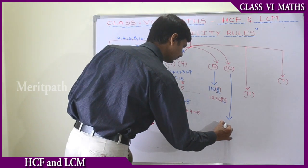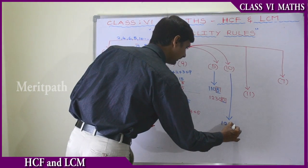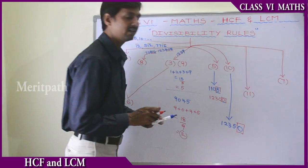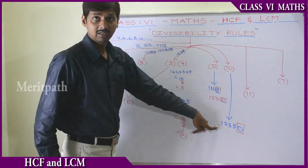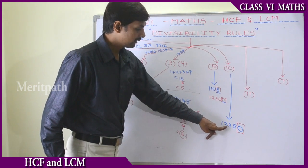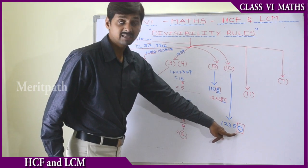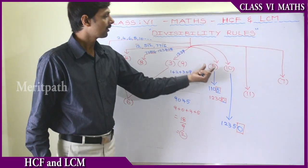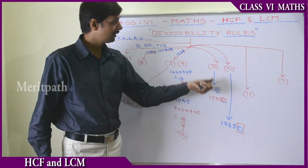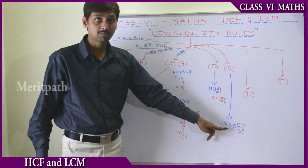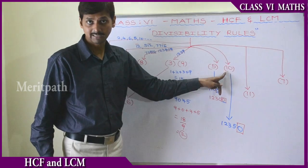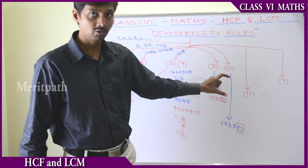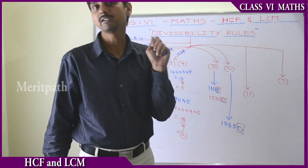For divisibility by 10: if the units place of a number is only 0, then the whole number is divisible by 10. For example, 12350 has units digit 0, so it is divisible by 10. So to summarize: units place is 0 or 5 — divisible by 5; units place is only 0 — divisible by 10. For 5 it can be 5 or 0 in the units place, and for 10 it should be only 0 in the units place.